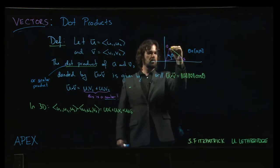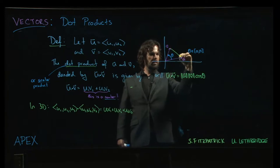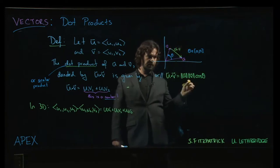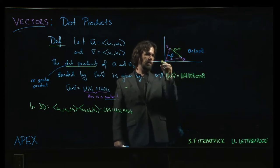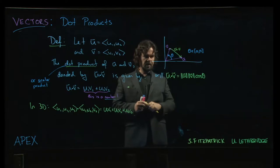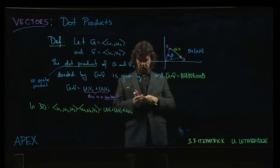I guess I want, let's see, this way, right? That's u minus v. V added to u minus v gives me u. And so the way that you actually connect the two is through the law of cosines.